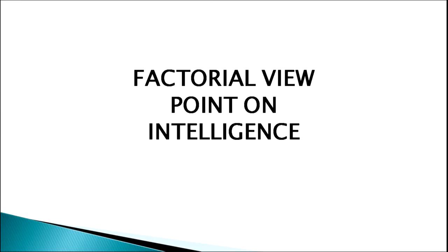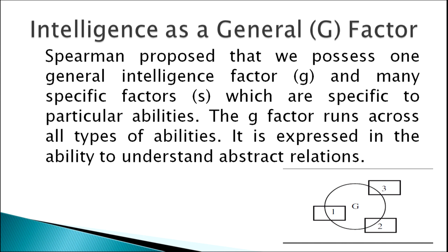First, we will talk about the factorial viewpoint of intelligence. Spearman was the propounder of this theory. According to Spearman, we possess one general intelligence factor — named G — and many other specific factors named S, which are specific to particular abilities. The G factor runs across all types of abilities and is expressed in the ability to understand abstract relations.